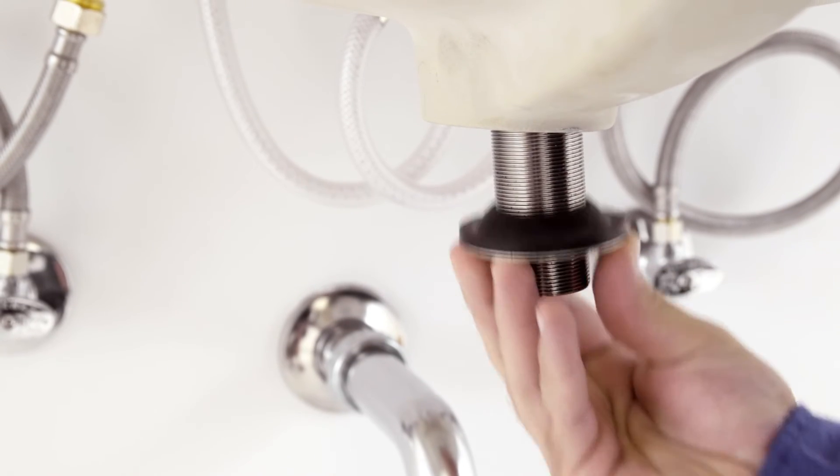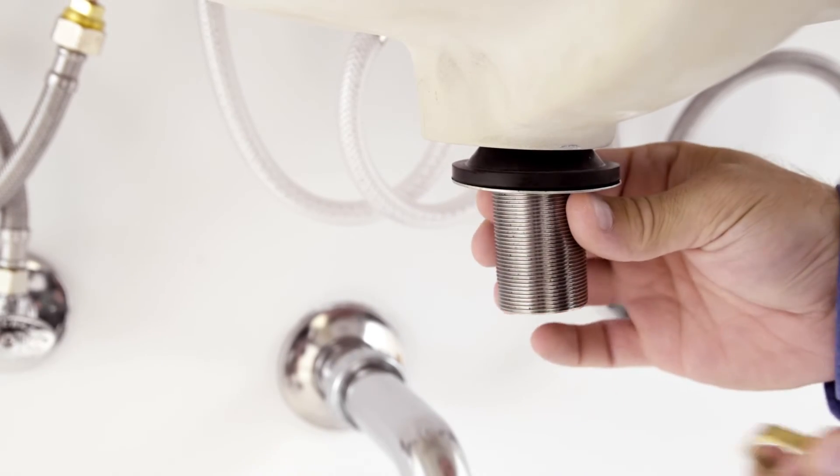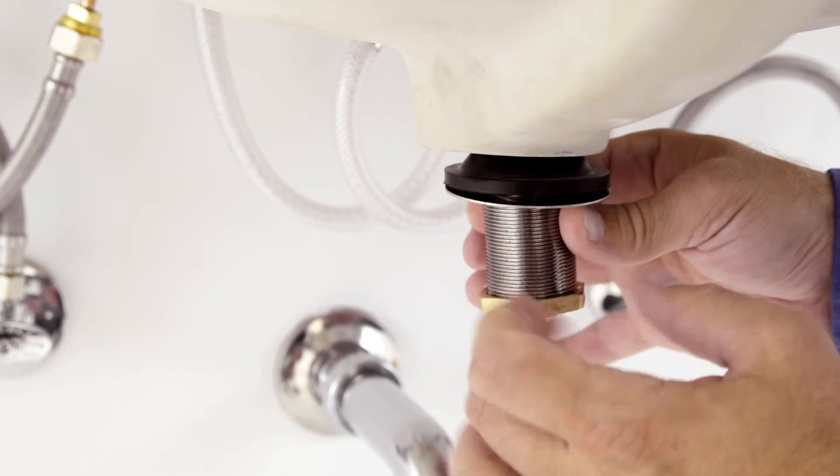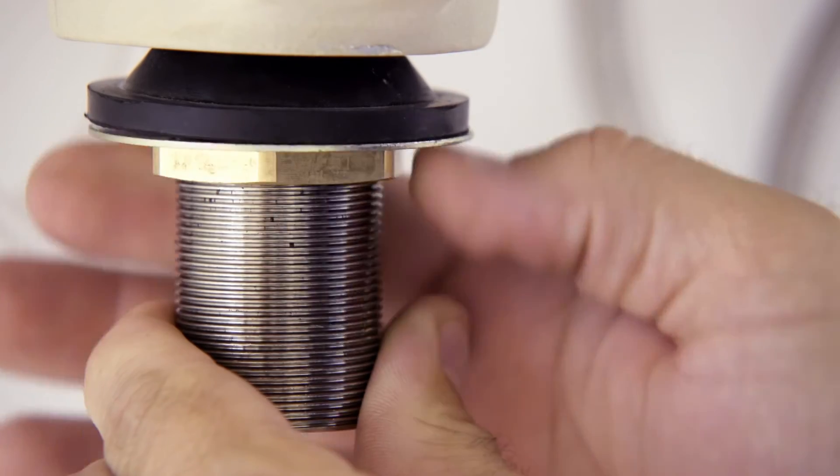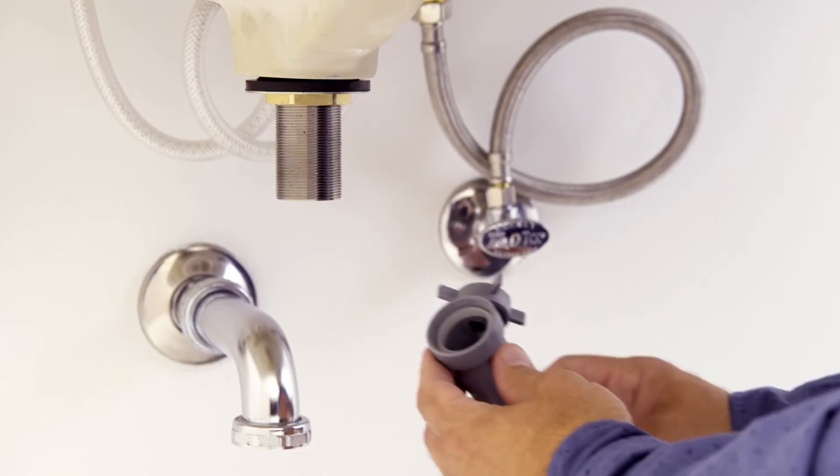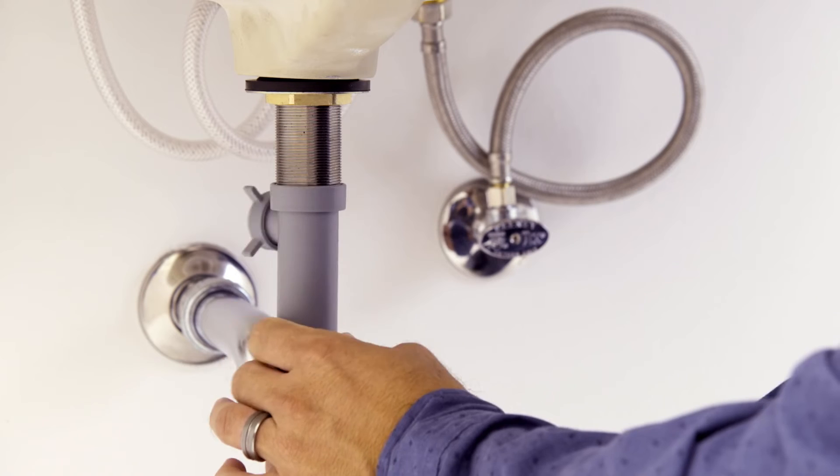Below the sink, install the black gasket, washer and brass nut onto the flange. But do not fully tighten the brass nut. Attach the tailpiece and hand tighten.